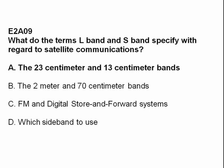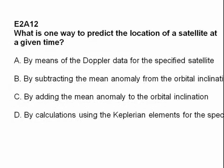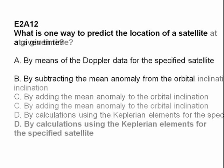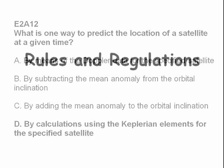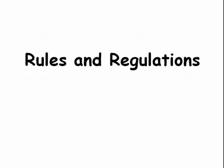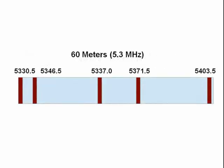Answer A: the 23 centimeter and 13 centimeter bands. What is one way to predict the location of a satellite at a given time? Answer D: by calculations using the Keplerian elements for the specific satellite.